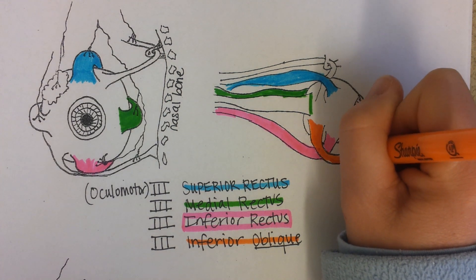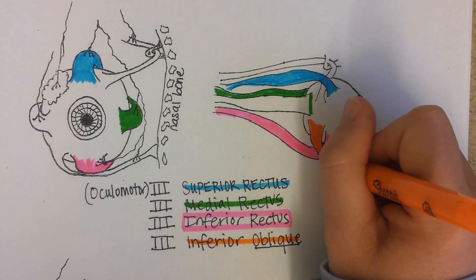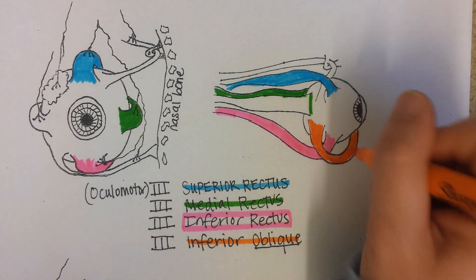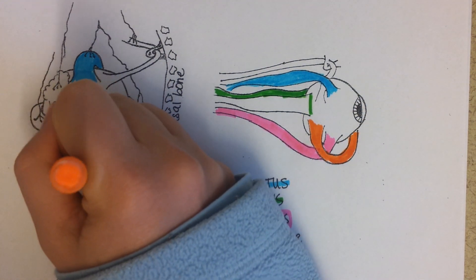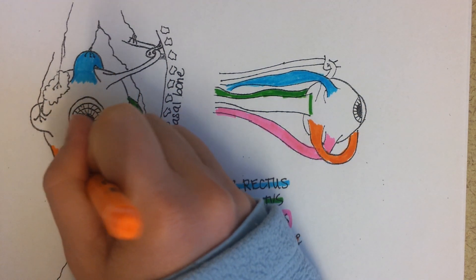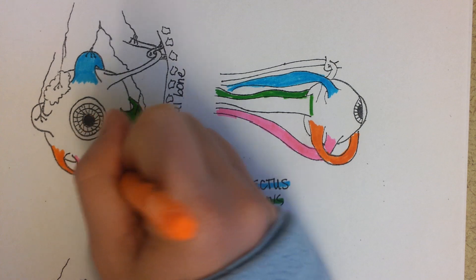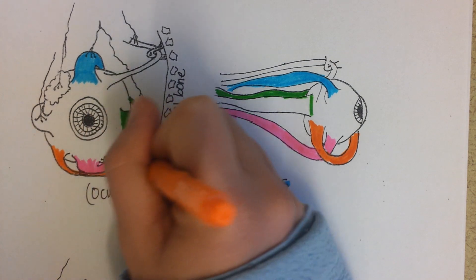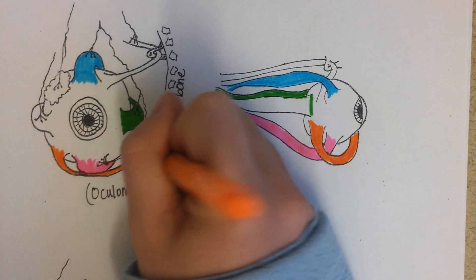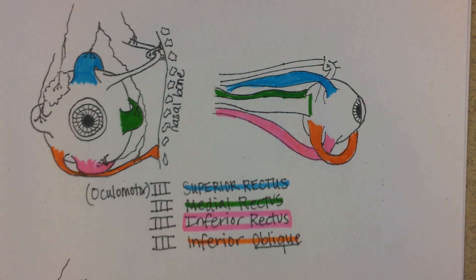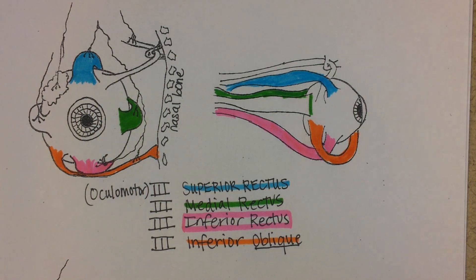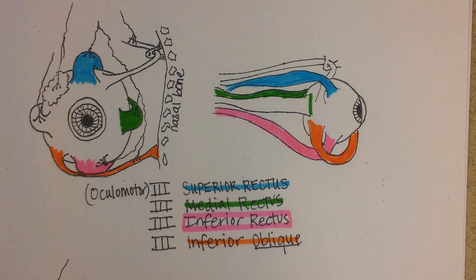This will help to roll the eye so that you can look at different angles. The combination of moving this oblique muscle in combination with other muscles gives us the ability to look more than just up, down, and side to side. We can also roll our eyeball.